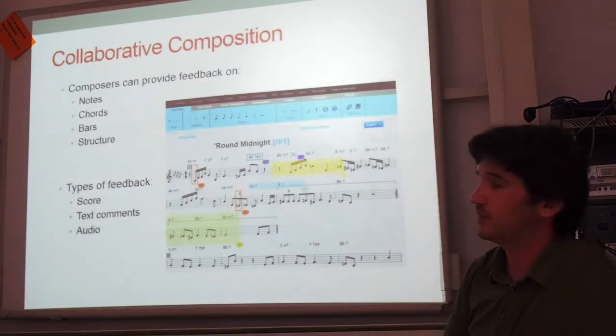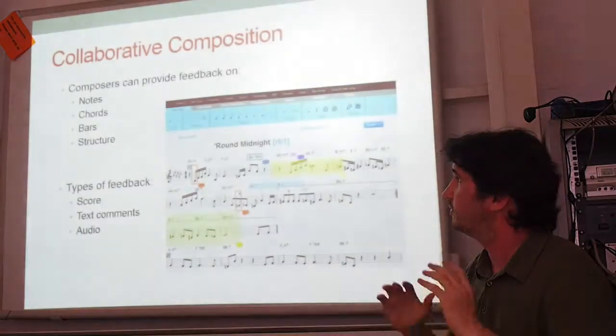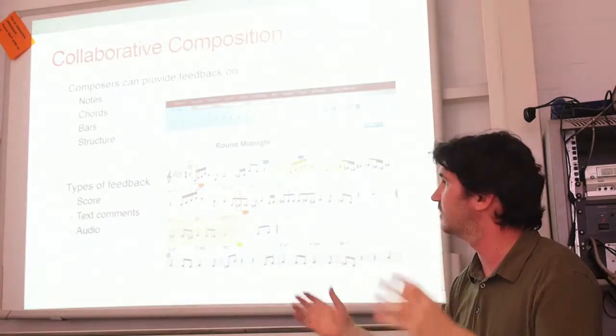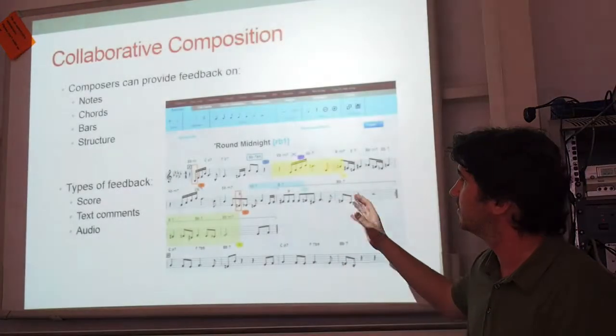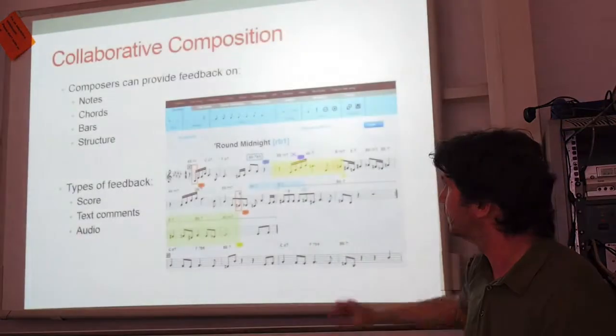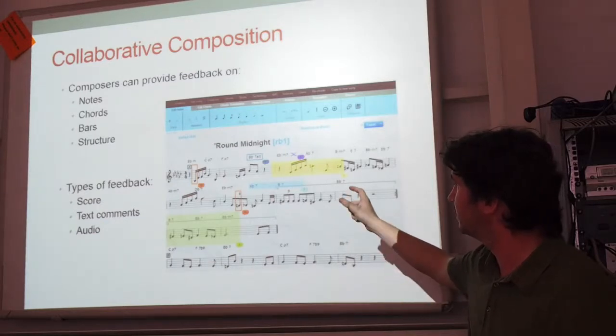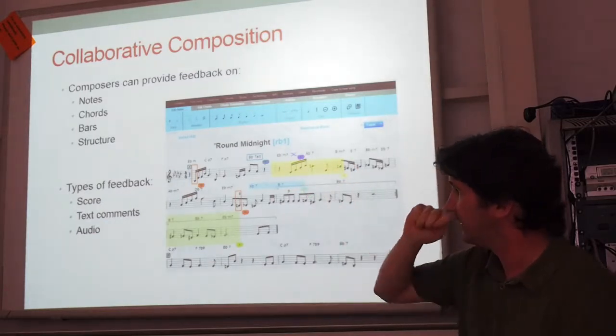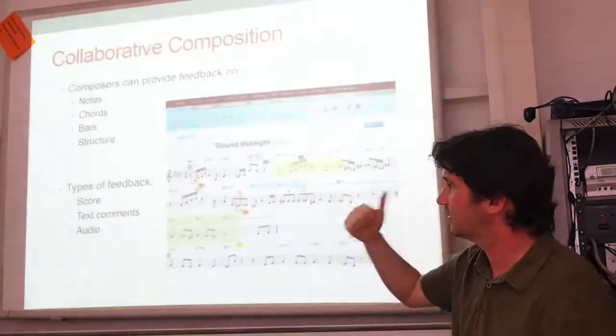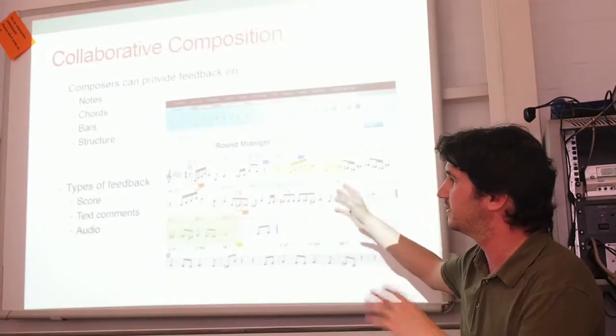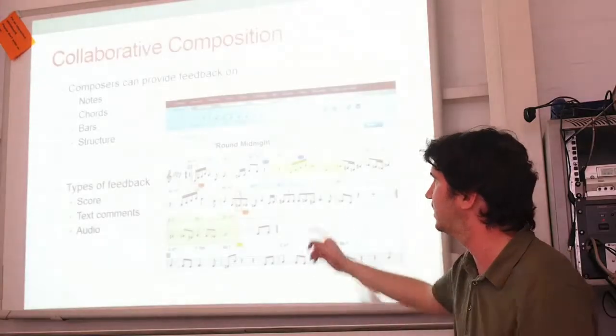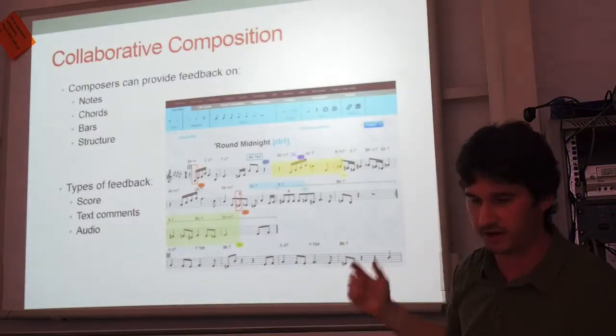And also for the Phrase project, we made the part of collaborative composition. So from a lead sheet of a composer, we want other composers to be able to make some suggestions or to make some comments on specific parts of the score. So you can see, we can make comments on a group of notes or a group of chords. And the type of feedbacks that we can give are three types. Score, which would be just suggestions of modifications of a score, text comments, and audio. We can upload audio files related to a part of the score. I will show this now.